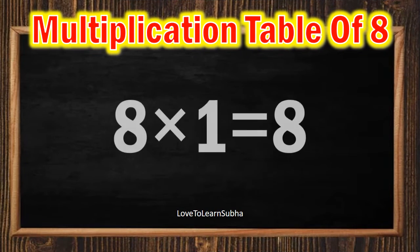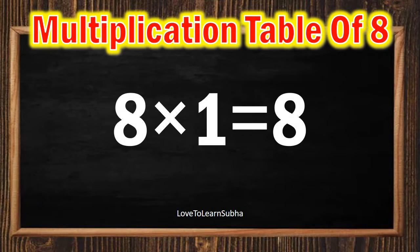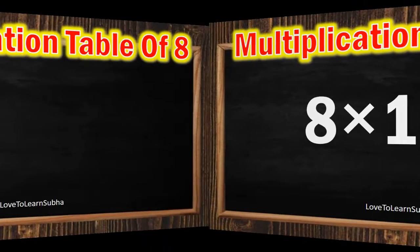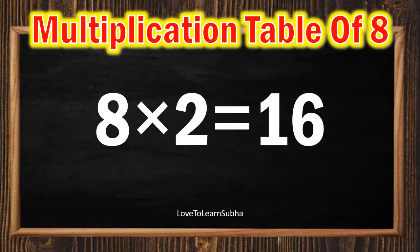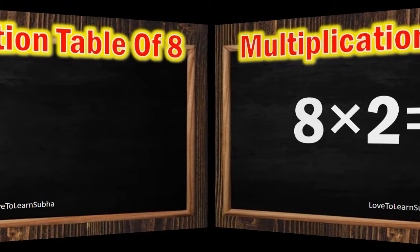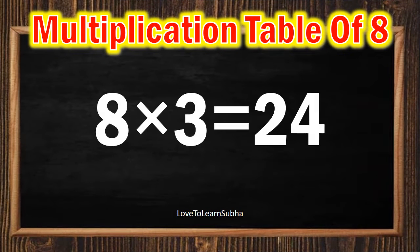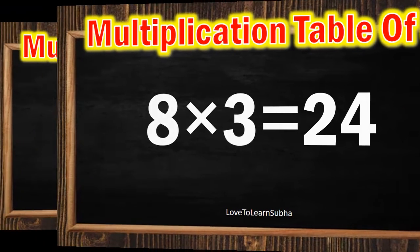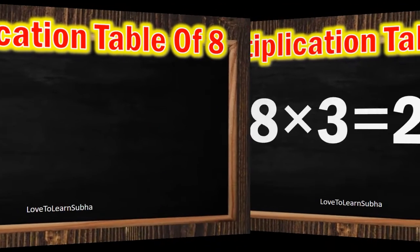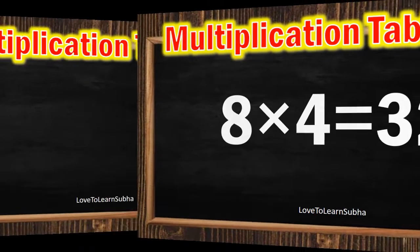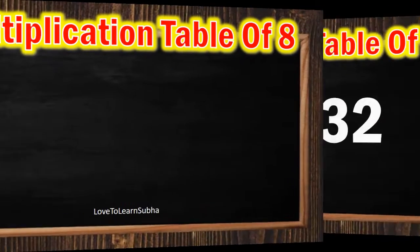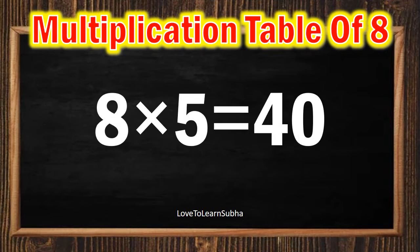8 ones are 8, 8 twos are 16, 8 threes are 24, 8 fours are 32, 8 fives are 40,